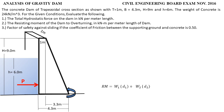Number three: factor of safety against sliding, given that the coefficient of friction between the supporting ground and concrete is 0.50. Due to the total hydrostatic force, the dam tends to slide to the right, generating friction between the supporting ground and the concrete. The formula is: factor of safety equals friction force over total hydrostatic force.